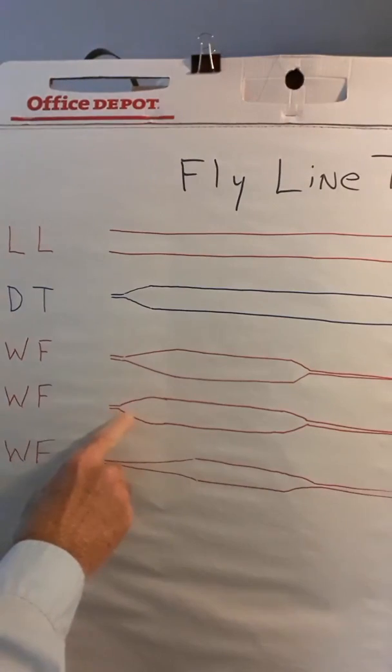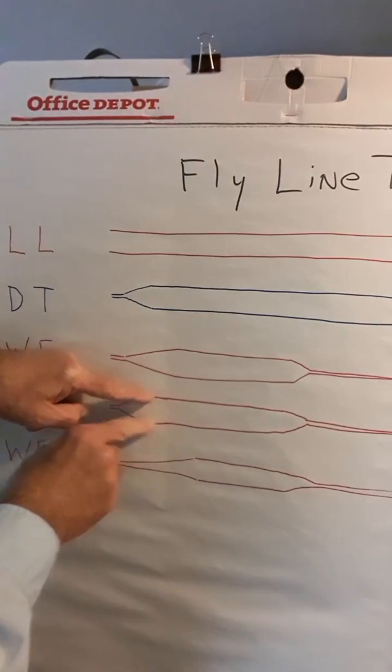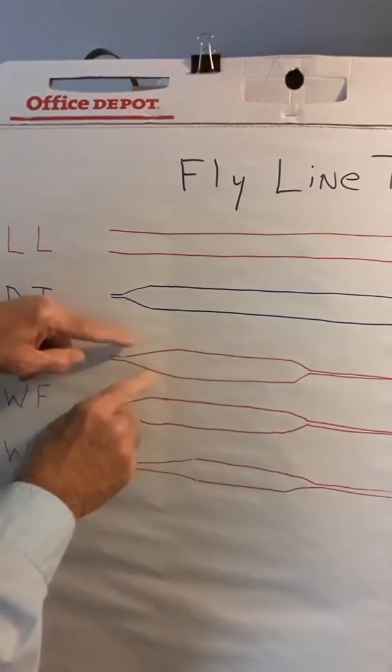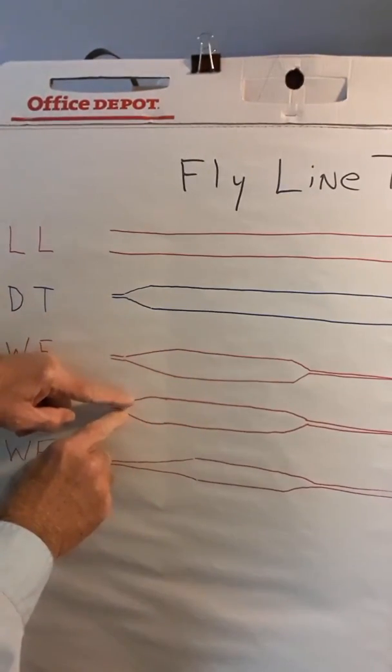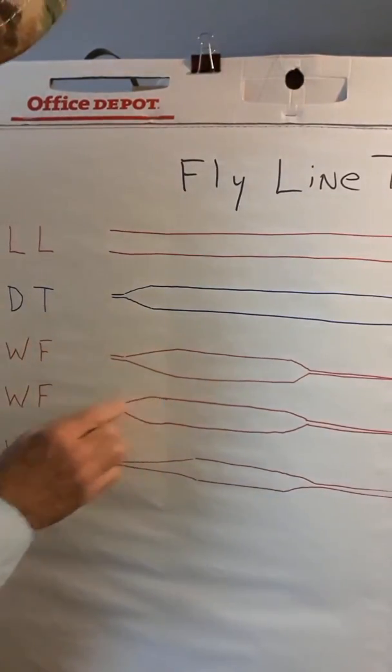You'll notice on this weight forward line, that it has more of a bulbous type head front taper than this one. This one's pretty straight. This one kind of, it's not rounded, but it maintains its angle greater.